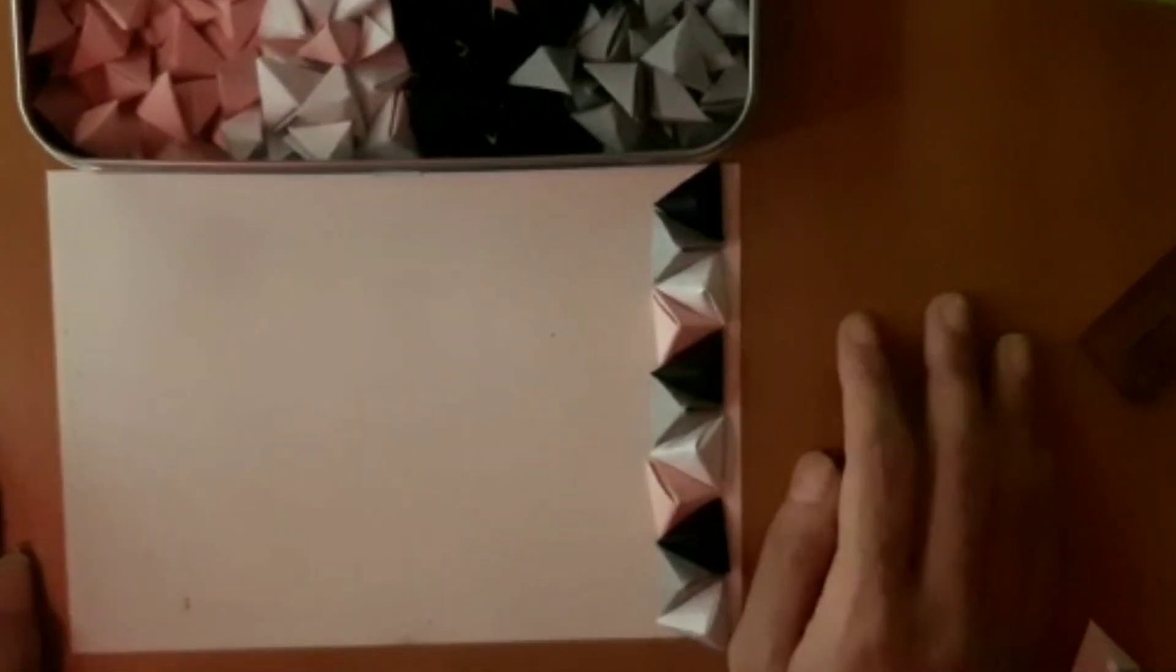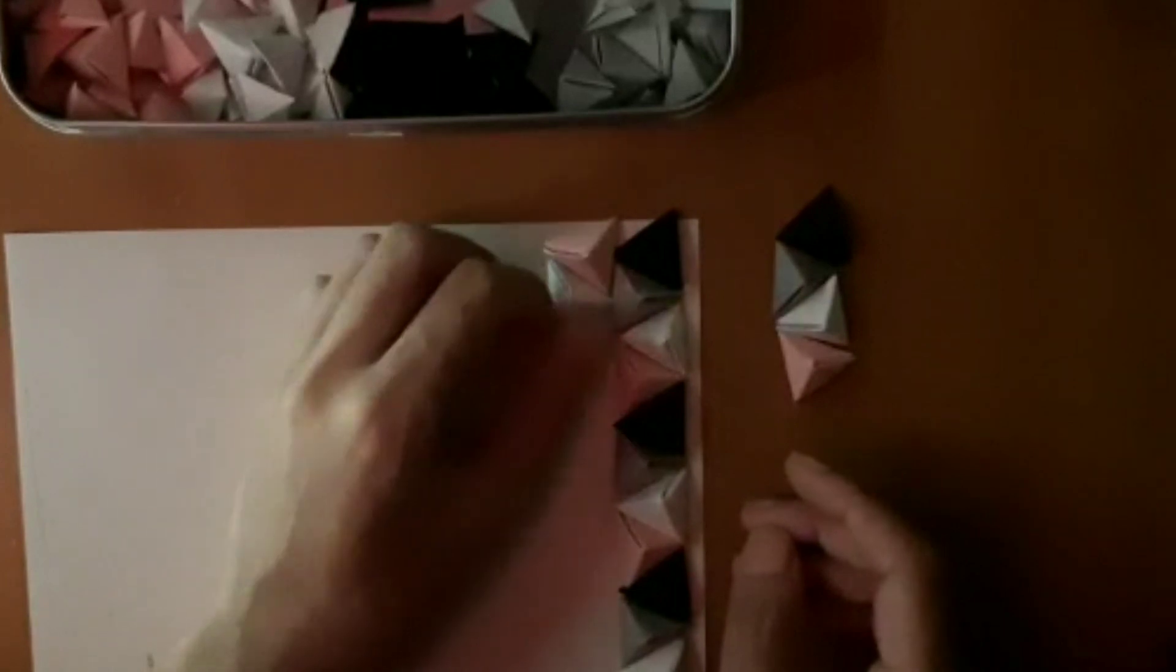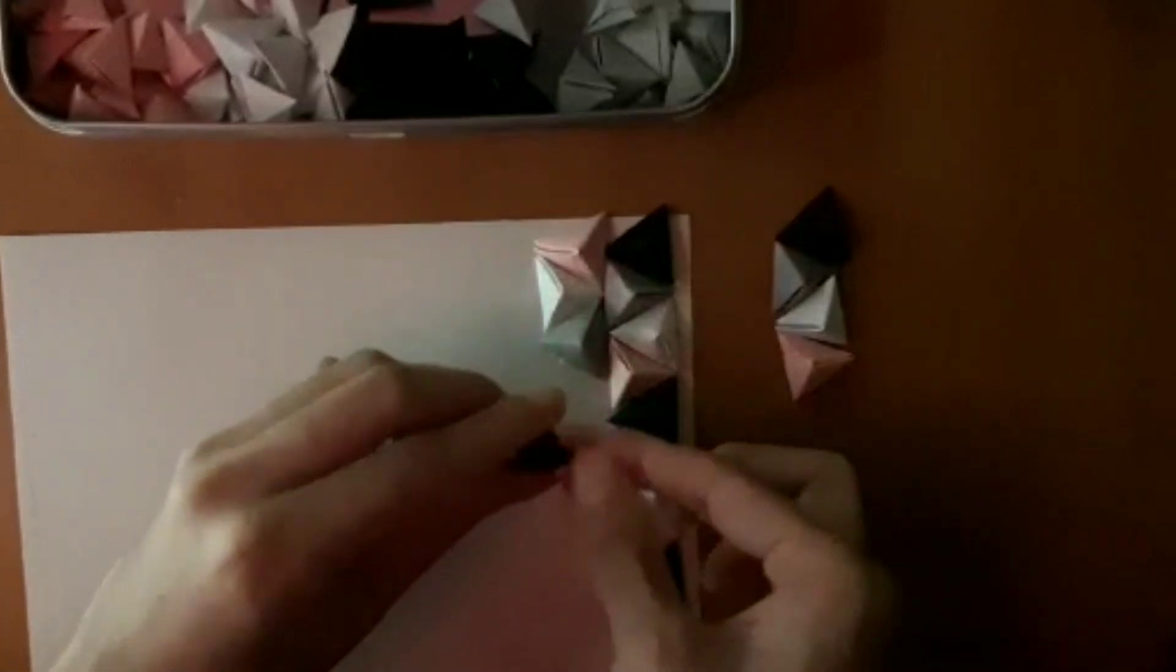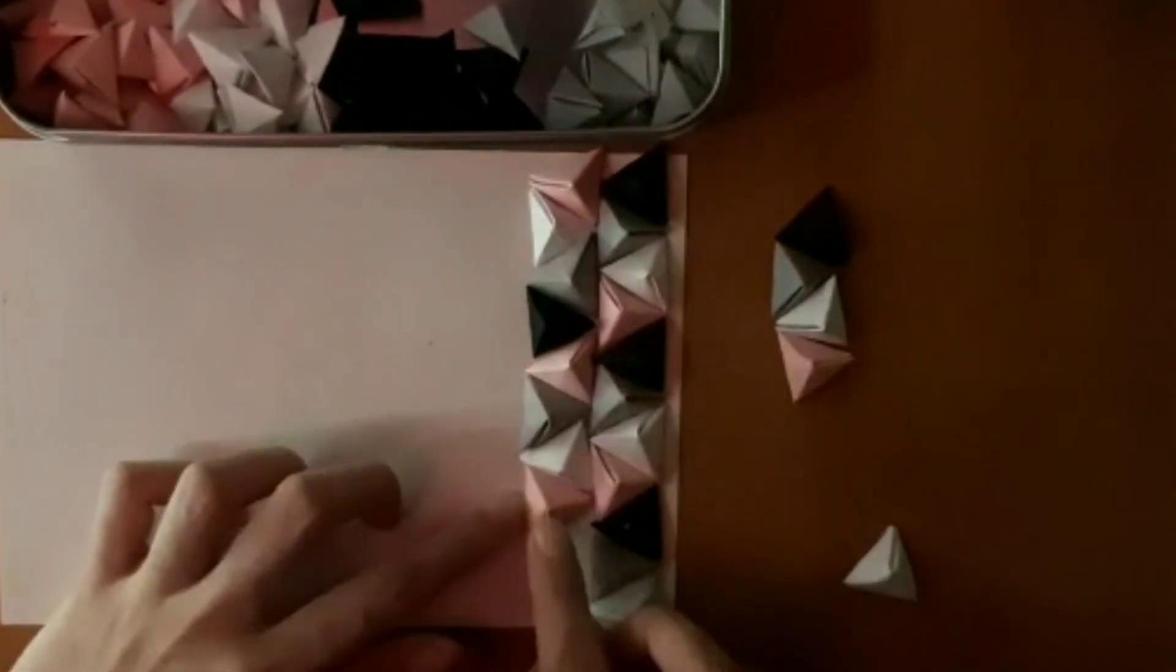And that's the first line. For the second line we just reverse the pattern so that the colors don't clash. That is pink, white, gray, and black. And you got it, you got to go.